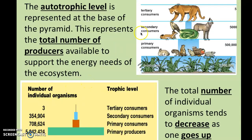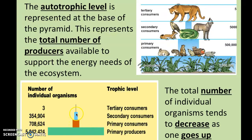The autotrophic level is your producer level, and generally they're the largest amount of organisms. In this example, you have 5 million producers — lots of grasses and other plants. The number of organisms gets smaller as you go up. One interesting thing: the individual organisms generally get larger as you go up, but represent a smaller population — only 5 tertiary consumers at the top. Over 5 million in the producer population, then it drastically decreases. The total number of individual organisms tends to decrease as you go up in trophic level.